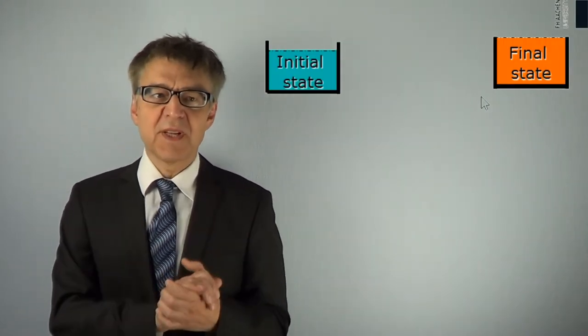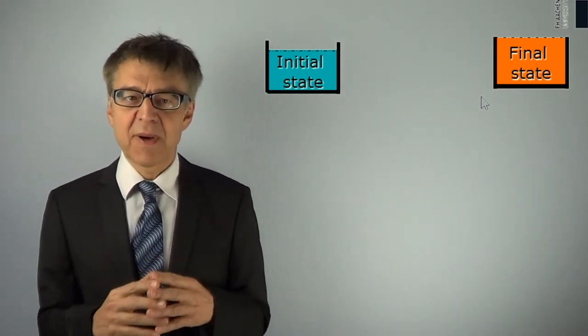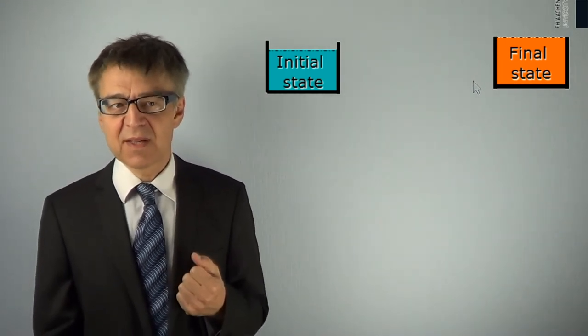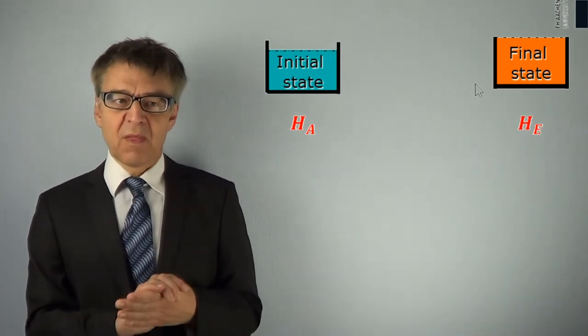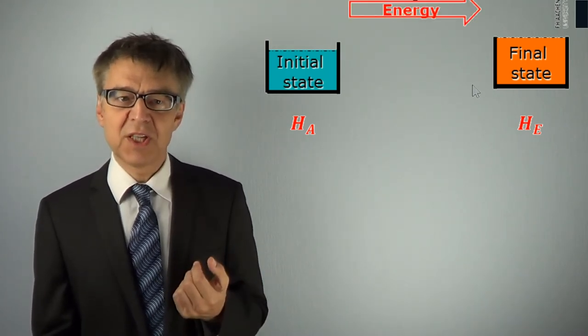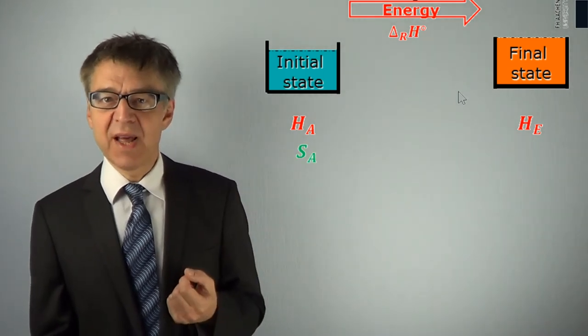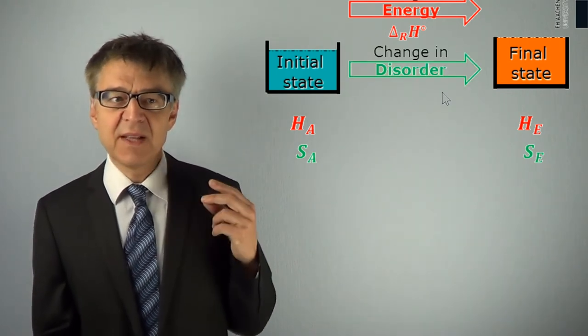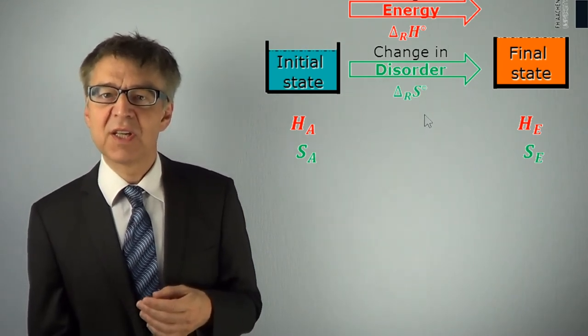Each process, whether physical, chemical or biochemical, can be characterized by specifying deltas, changes of thermodynamic state variables: the enthalpy change delta H, a measure of energy change; the entropy change delta S, a measure of the change in disorder; and delta G, a measure of the change in instability.